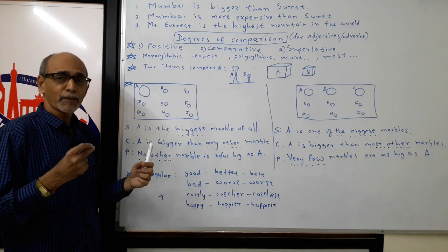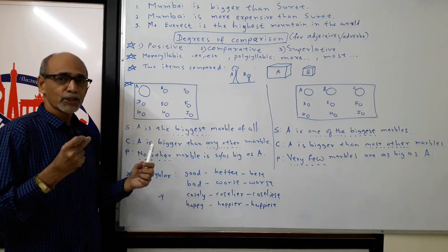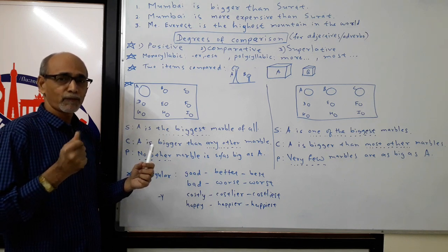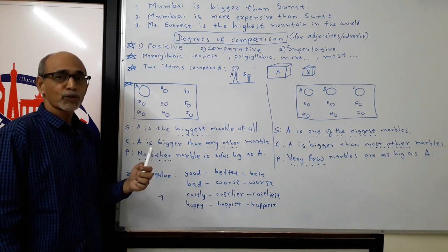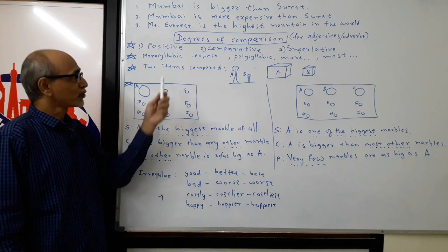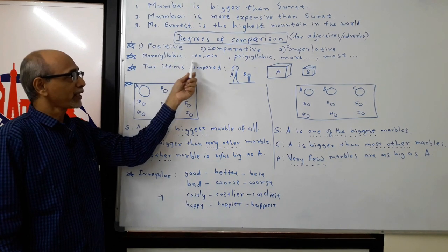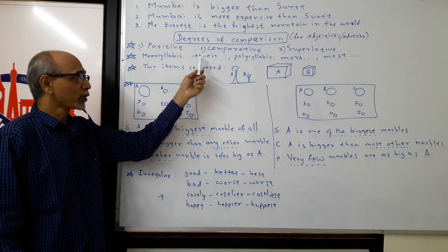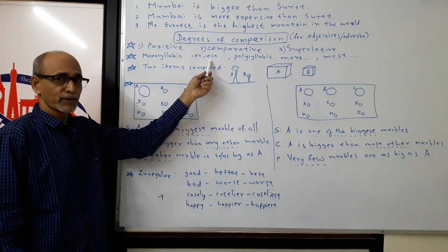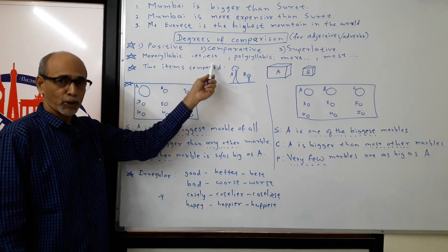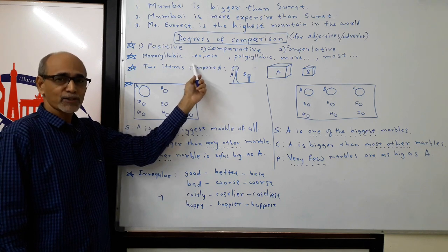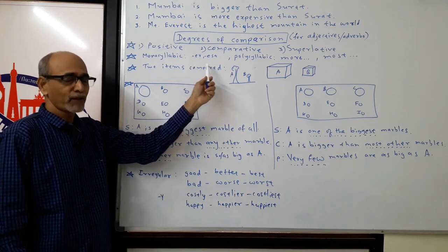For example, when you say big, tall, or fast, such words are monosyllabic. Such words in comparative and superlative will require -er and -est. Big, bigger, biggest. Tall, taller, tallest. Fast, faster, fastest. Very easy.